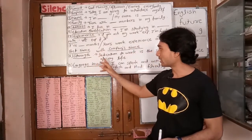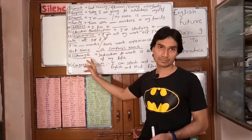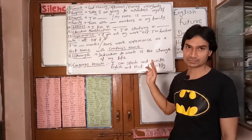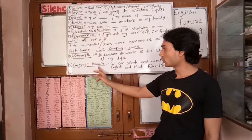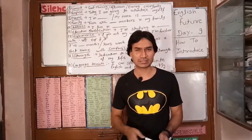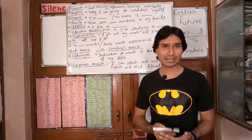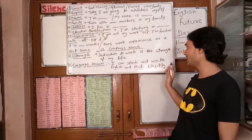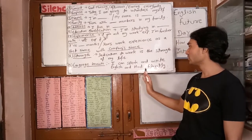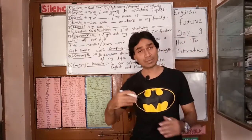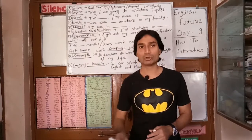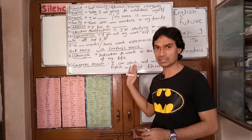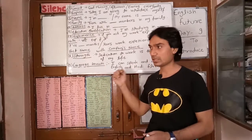Then you will mention your strengths — things that make you comfortable with yourself. Next, languages: how many languages do you know? There are two or three languages you should mention. For example, 'I can speak and write Hindi and English fluently.' If you know three languages, you can add that too.